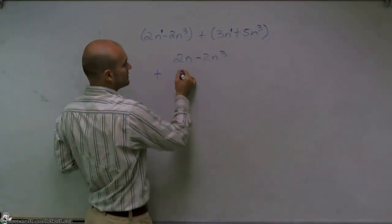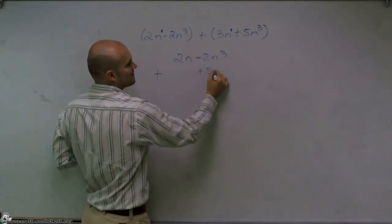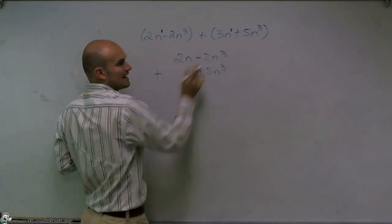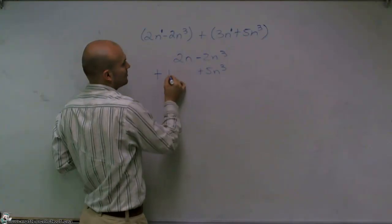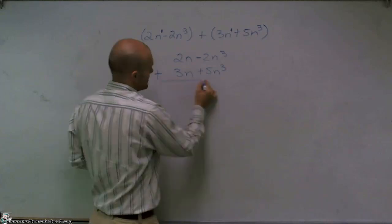I don't want to put 5n cubed under the n. I can only add a positive 5n cubed to the negative 2n cubed. And then I have plus 3n.